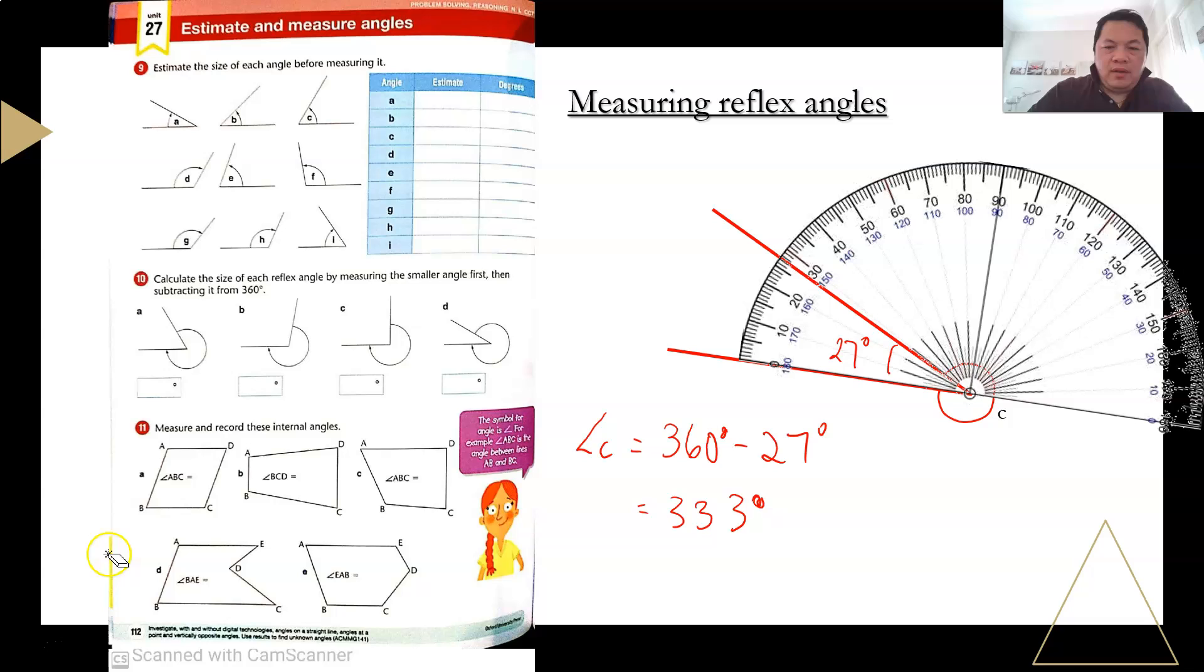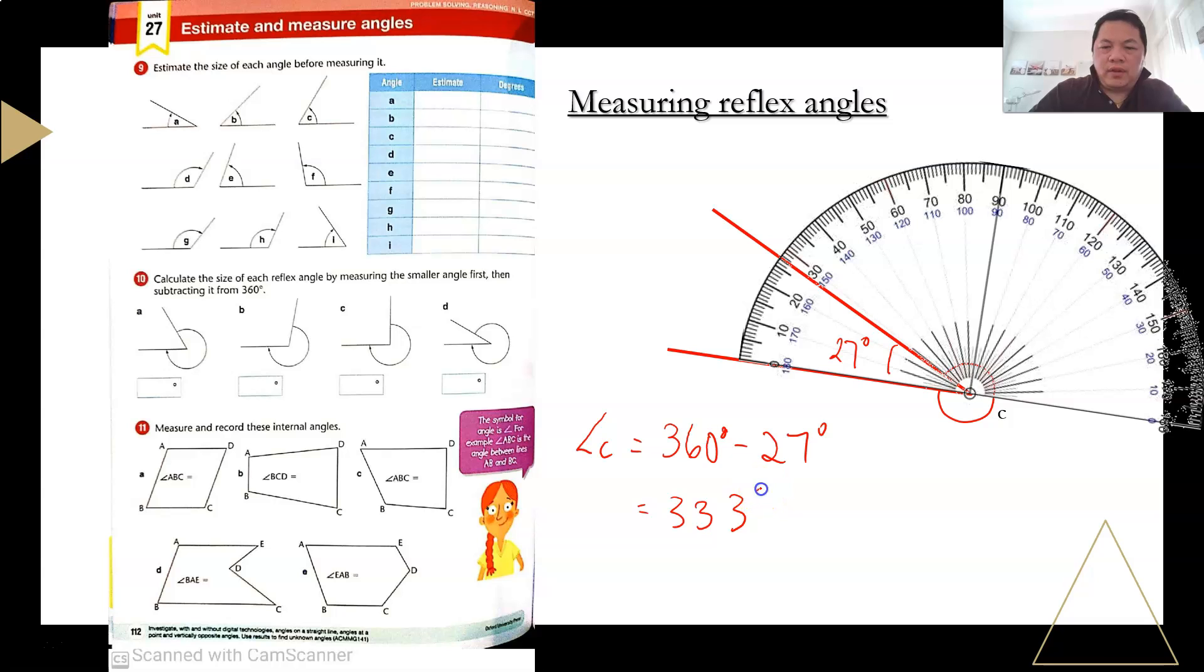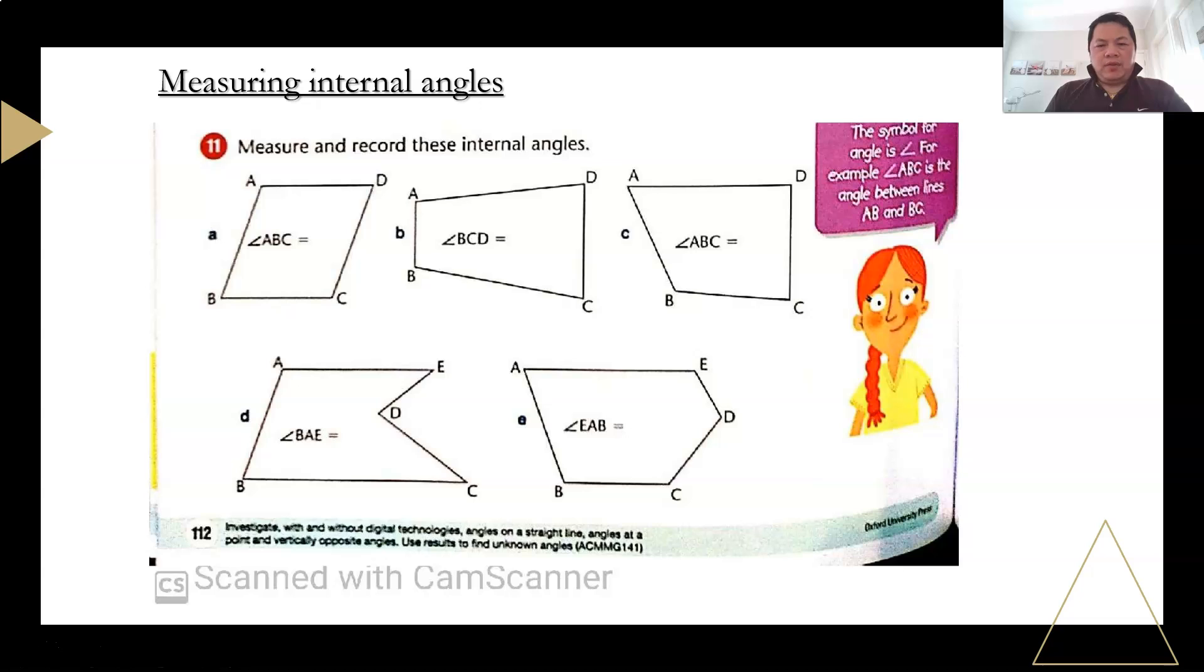So to find angle C, angle C will be just 360 degrees minus 27 degrees, which is 333 degrees. So that is the value of angle C. Got it everyone? So because angle C is a reflex angle, it's a quite big angle. It's 333 degrees. Got it everyone? Good. Let's move on. That's how you measure the reflex angle in this part of the book. You have to measure the reflex angle. Moving on to the next part of the question.